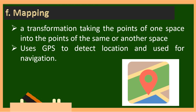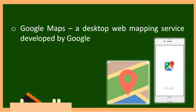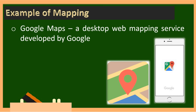Mapping is a transformation taking points of one space into the same or another space. It uses GPS to detect location and is used for locating addresses. For example, drivers use GPS to locate the address of their clients. The most famous example is Google Maps, a desktop web mapping service developed by Google, though there are other applications available for getting directions or finding locations.